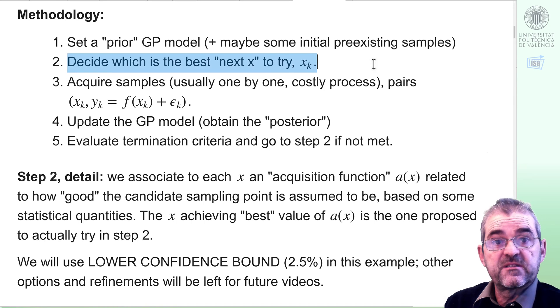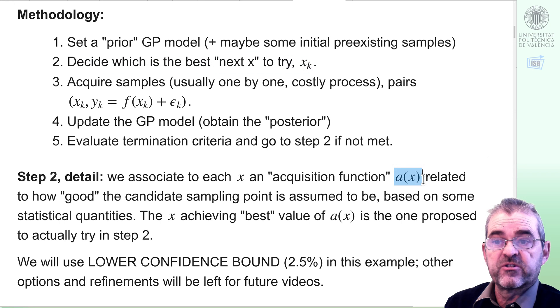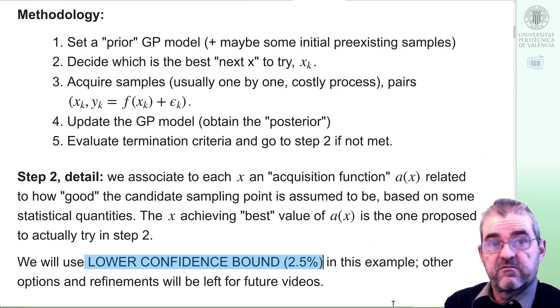In order to decide which is the best sample to try, we need to do a statistical analysis on how promising a point x is. We do it for all x. And the most promising, the one which achieves the best value of some function a(x) related to how good it is, then we will choose that one as the next sample. And a(x) is called the acquisition function or surrogate function in literature. And in this first simple example we will just use what is called the lower confidence bound acquisition function.